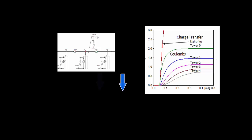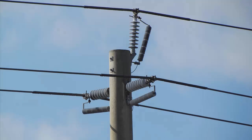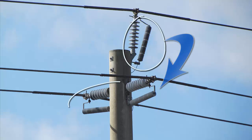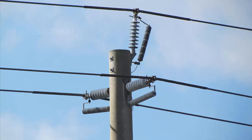Each tower away from the struck tower conducts current to share in the event. It is for this reason that the top arrestor in the Lakeland scheme is of the same energy rating as the lower two. Their arrestor failure rate to this date has not been an issue for them.